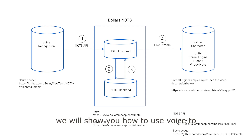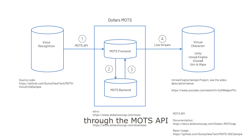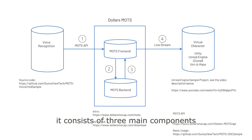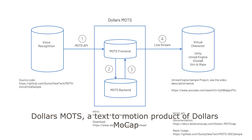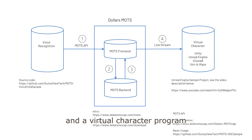In this video, we will show you how to use voice to control the motions of a virtual character through the Moe's API. It consists of three main components: the voice recognition program, Dollars Moe's — a text-to-motion product of Dollars MoeCap — and a virtual character program.